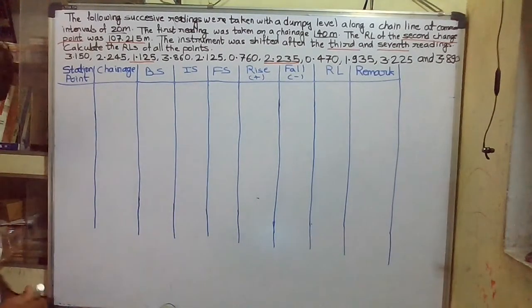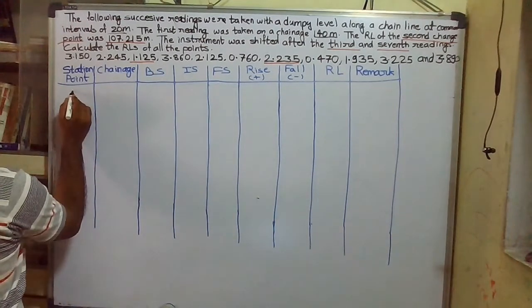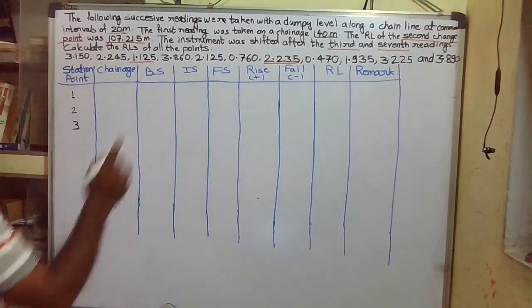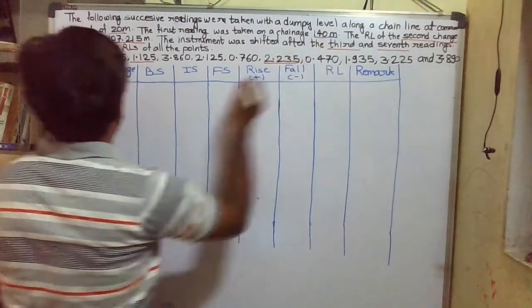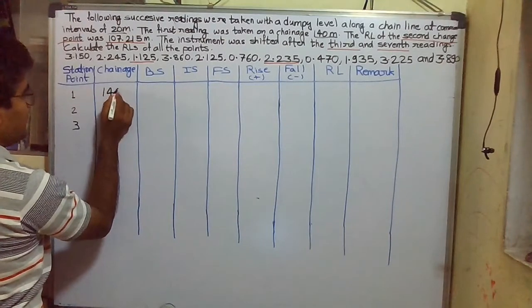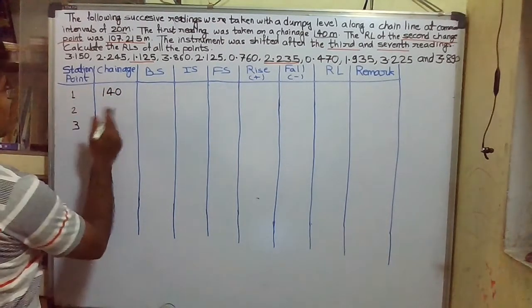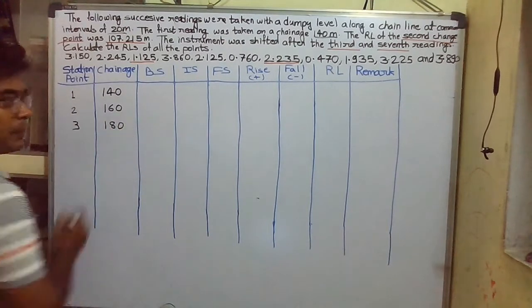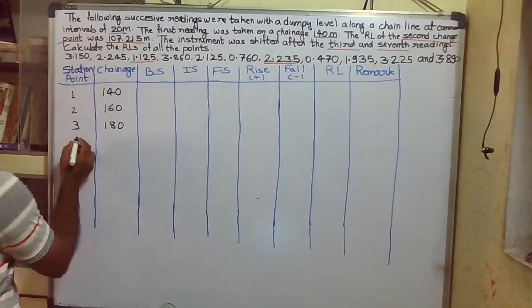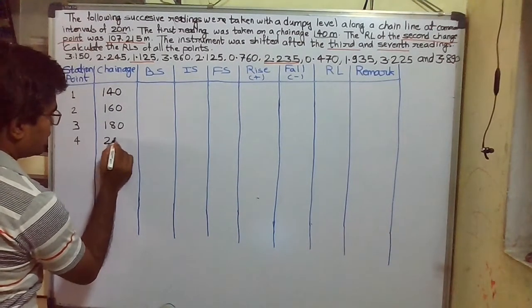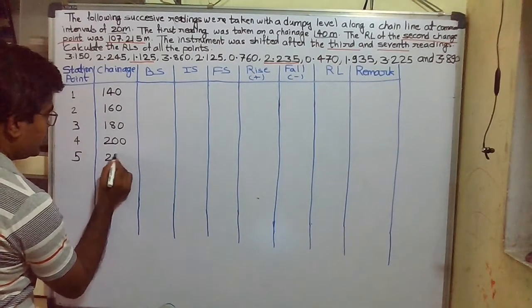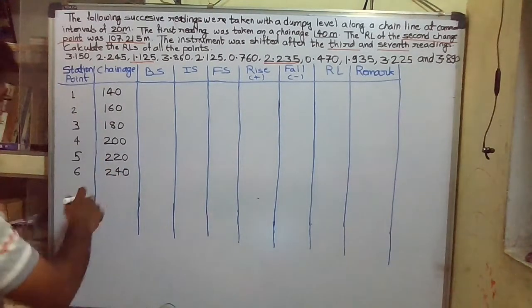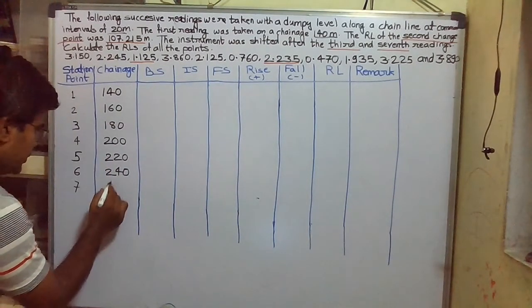We have to fill in the station points and their chainage. The first reading is taken at a chainage of 140 meters, so our first chainage is 140 meters. With an increment of 20 meters, the second station point is 160 meters, the third is 180 meters. Then station point 4 is 200 meters, station point 5 is 220 meters, station point 6 is 240 meters, and the seventh point is 260 meters.